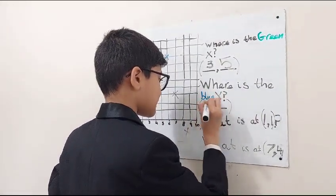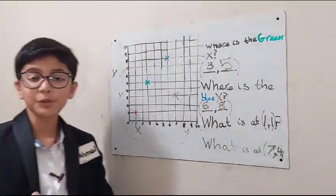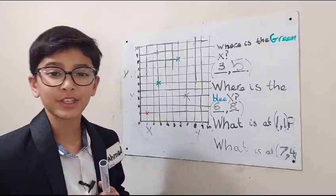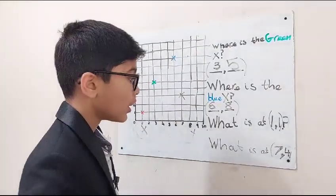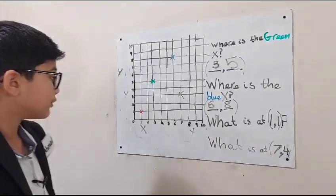So six, eight. If you got that right, well done, good job. If you got that wrong, you can always get it on this next one. So what is at one, one?